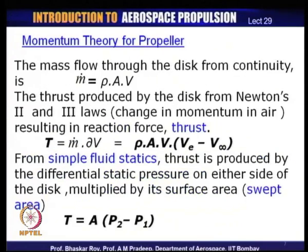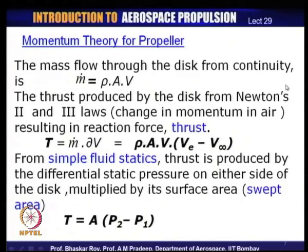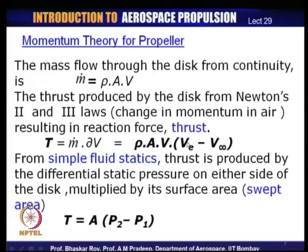The mass flow through the disc from general continuity can be written as ṁ = ρAV, where ρ is the density of air, A is the area of actuation, and V is the velocity at any given point in that domain. The thrust produced by the disc from Newton's principles — due to the change in momentum in air — would be in terms of ρAV, where A and V can be taken anywhere in that domain, and the change across the entire domain from V∞ to V_e gives us the thrust.